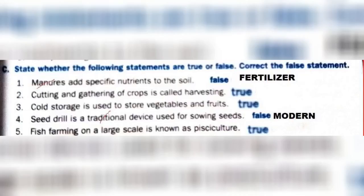Check whether the following statements are true or false, and correct the false statements. Manure adds specific nutrients to the soil — False. Fertilizers add specific nutrients to the soil — True. Cutting and gathering of crops is called harvesting — True.